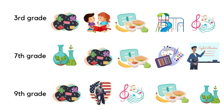Let's look at a class schedule. If you are in seventh grade: first period is science, second period is math, third period is lunch, fourth period is art, fifth period is English. In ninth grade: first period is math, second period is history, third period is music, fourth period is lunch, fifth period is science.